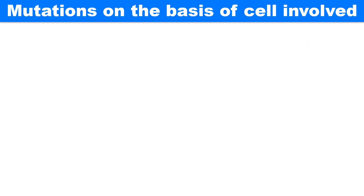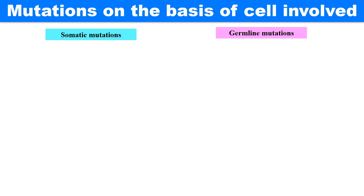Now, mutations on the basis of the cell involved can be of two types: somatic mutations and germline mutations, which are also sometimes called germinal mutations.